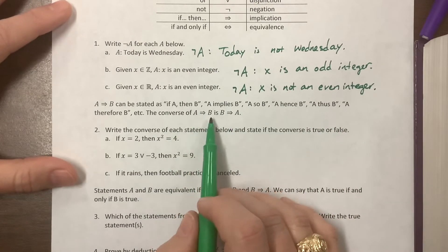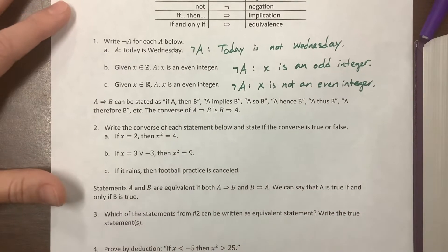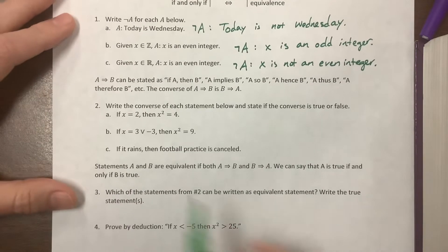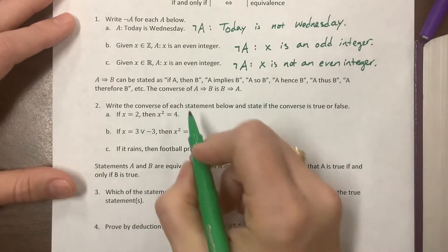The converse of 'A implies B' is 'B implies A.' You may have seen this in geometry. We're going to look at these, find the converse of each statement, and then say if it's true or false.